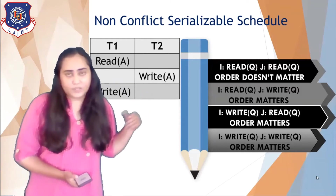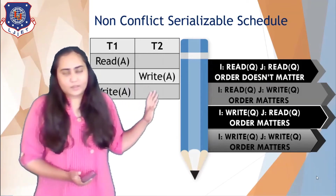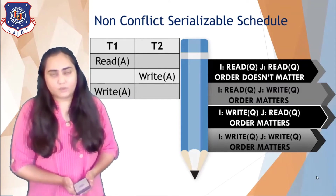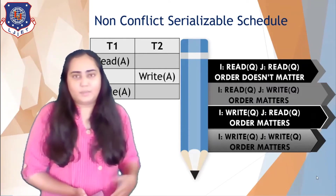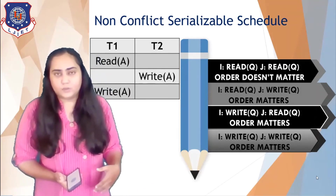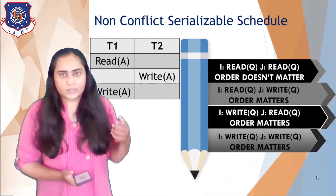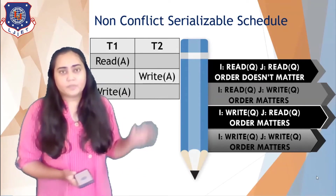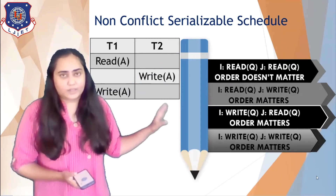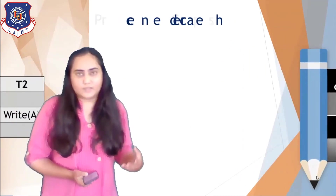This is a simple process for small schedules, but imagine a huge banking system with hundreds of transactions running simultaneously — you cannot apply all four rules and check every conflict manually. To avoid that, we have a shortcut known as a precedence graph.